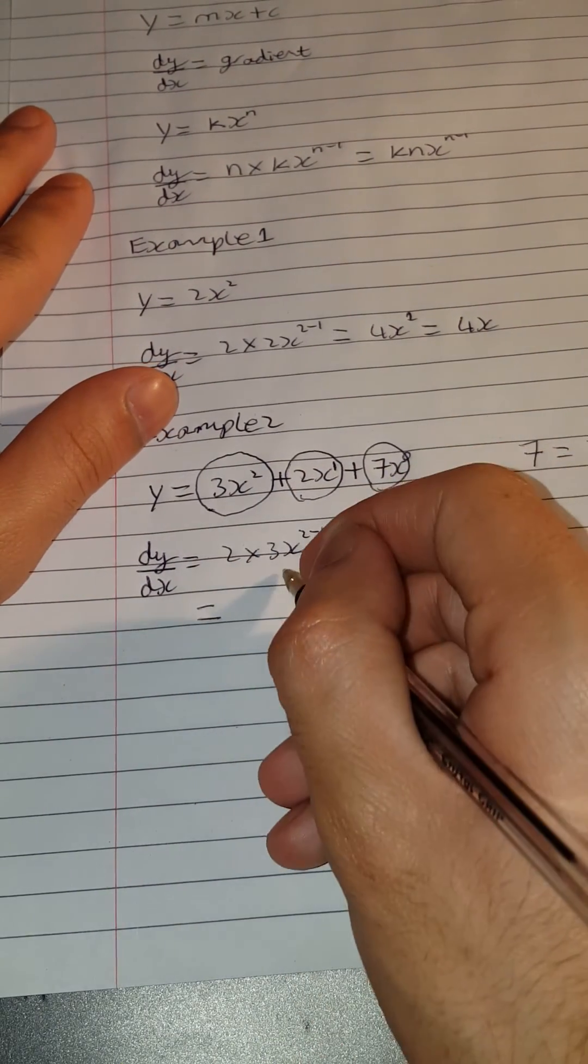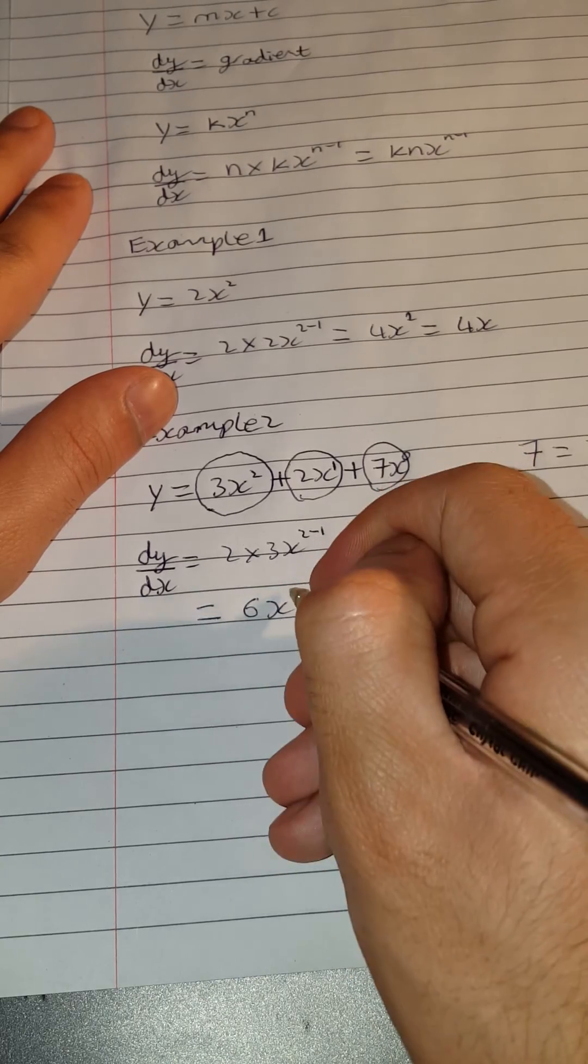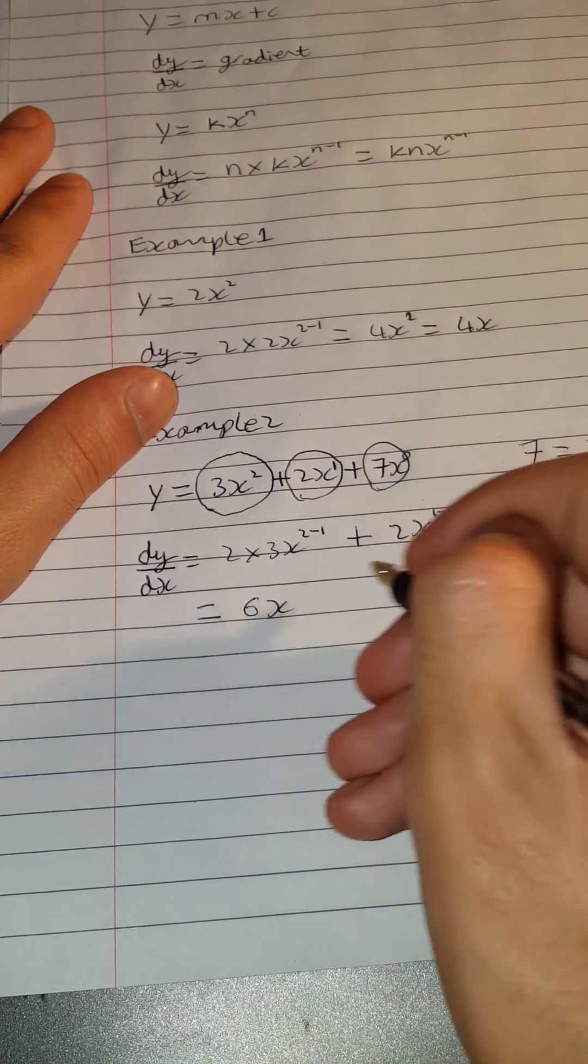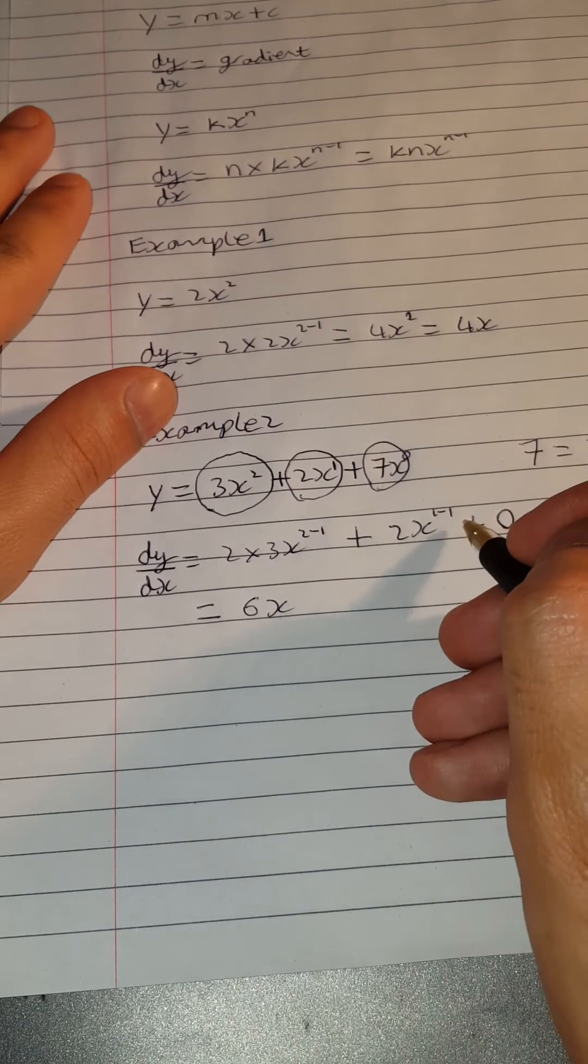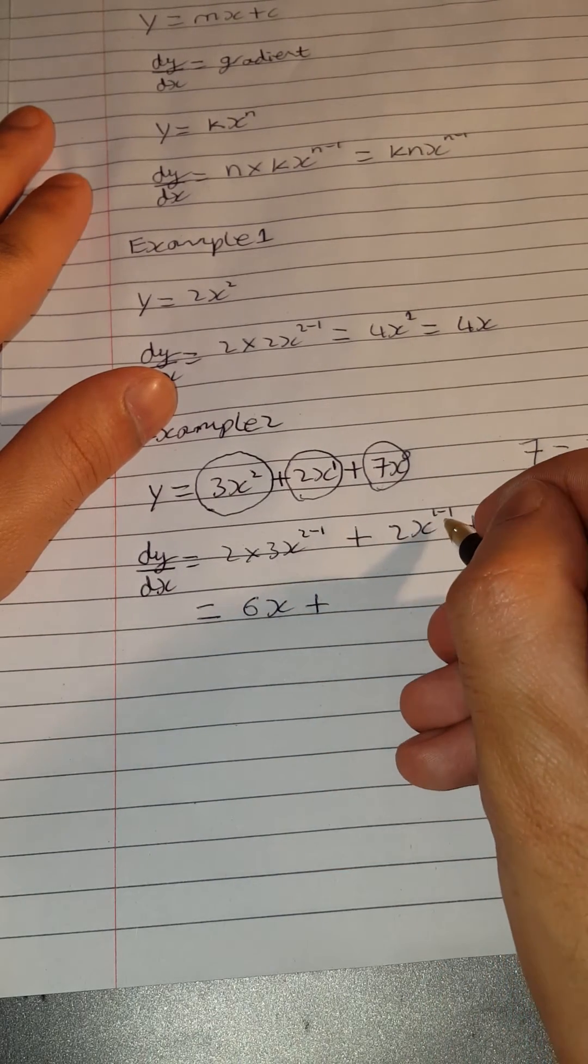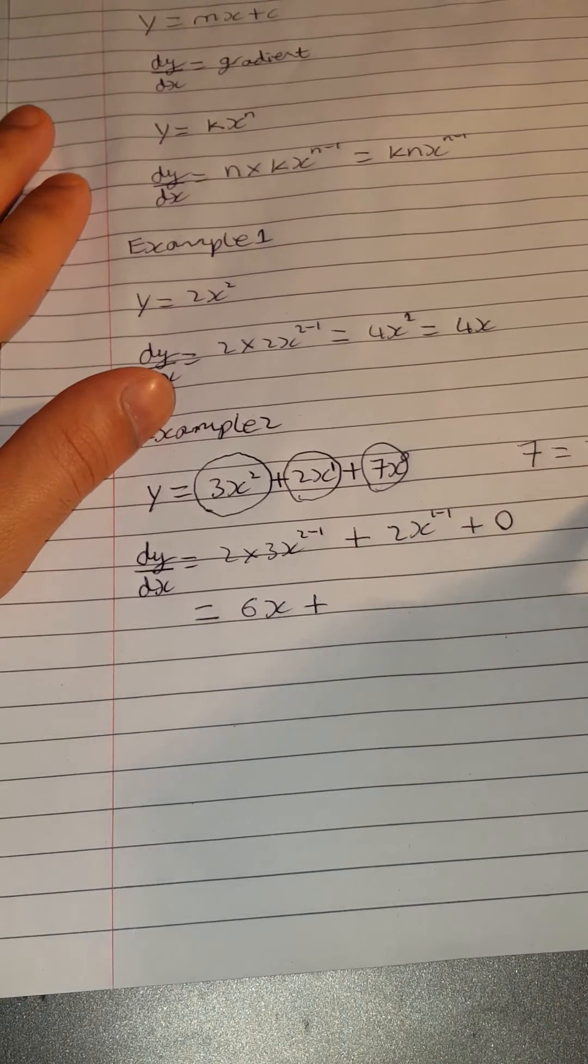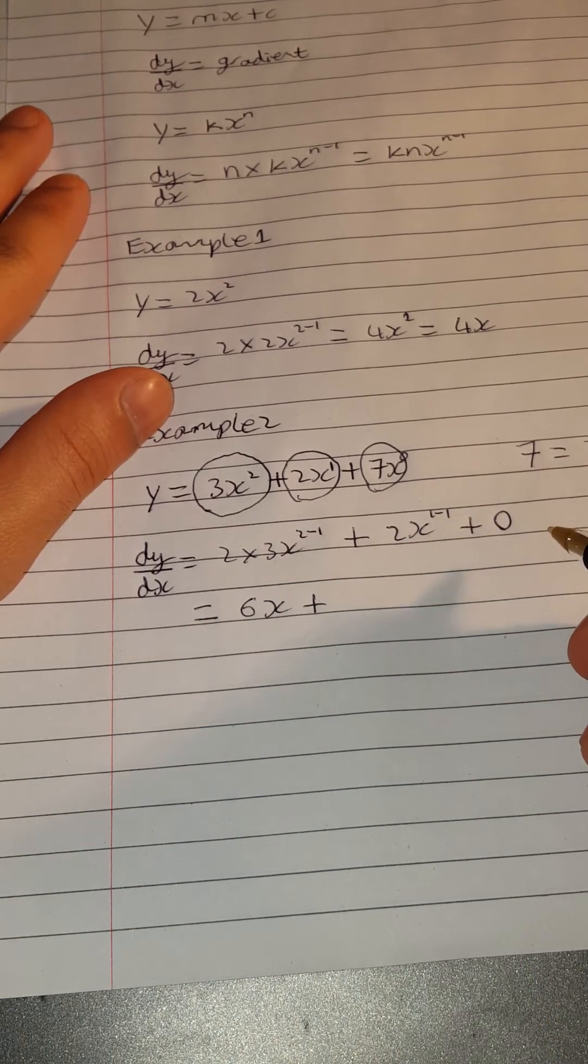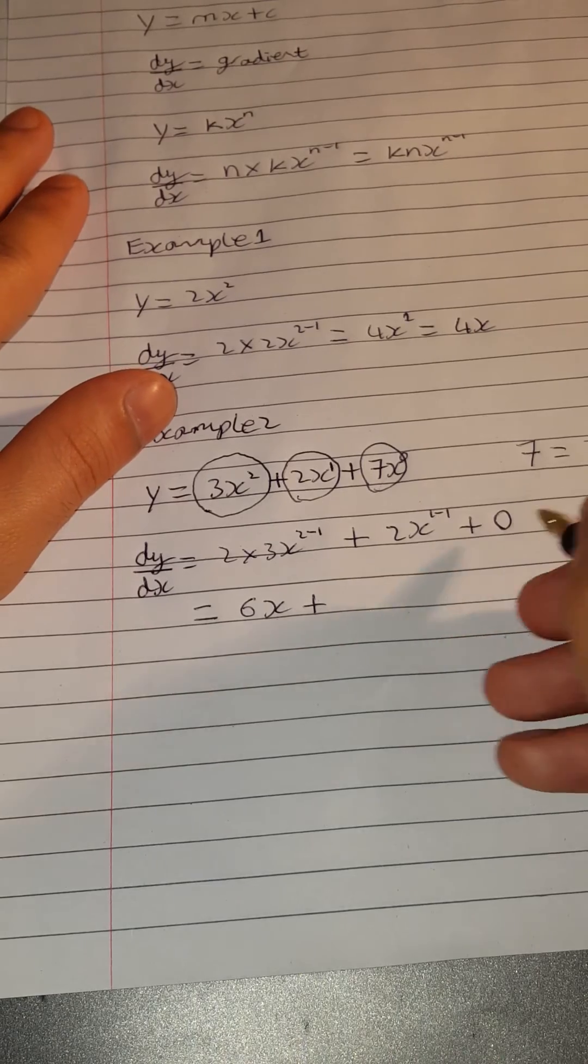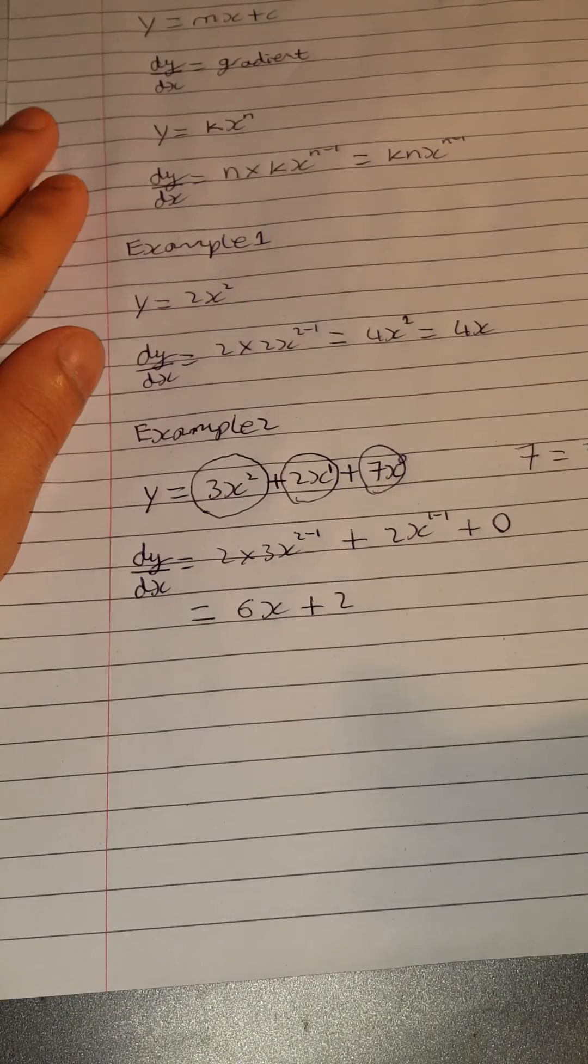We get 2 times 3, which is 6, x to the 1, which will just be 6x. And then plus 2x to the 1 minus 1. 1 minus 1 is 0. As I said earlier, anything to the power of 0 is just 1. So this just becomes 2.